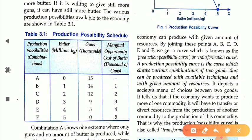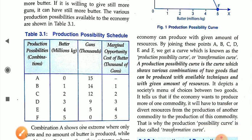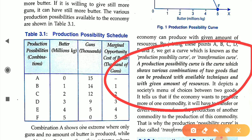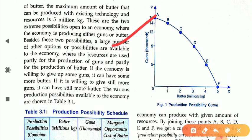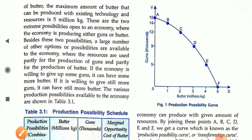The available technique means the technology you have is already fixed — there is no change in technology during the period of study. Similarly, the given amount of resources means resources remain constant; there is no change in the amount of resources. Points A, B, C, D, and E represent the different combinations of the two goods on the PPC curve.